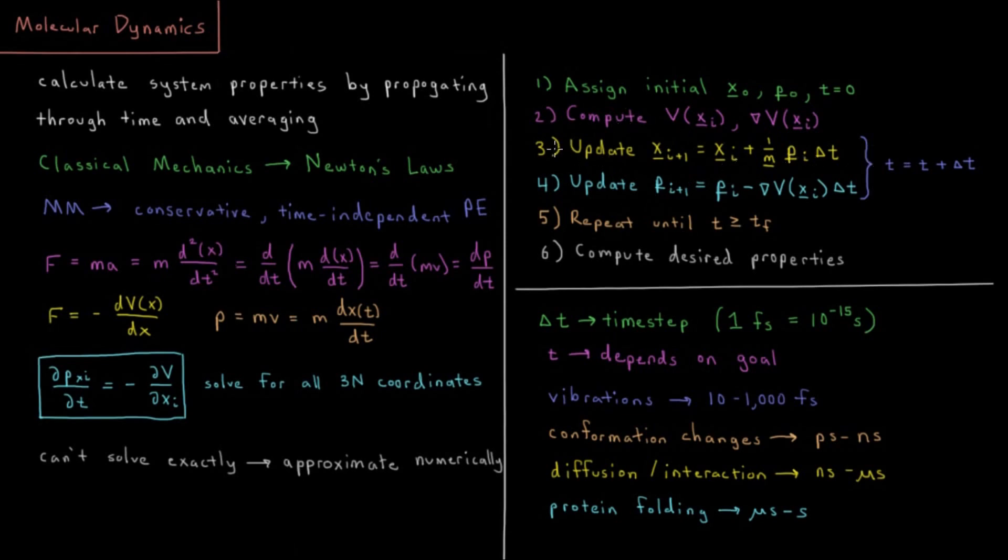So we do this and we do every one of those steps. And at each of those steps three and four, the time increases. The new time is the old time plus delta t. We repeat these three steps here until the time reaches the final time that we want to simulate. And then finally we compute whatever properties of our system we desire.